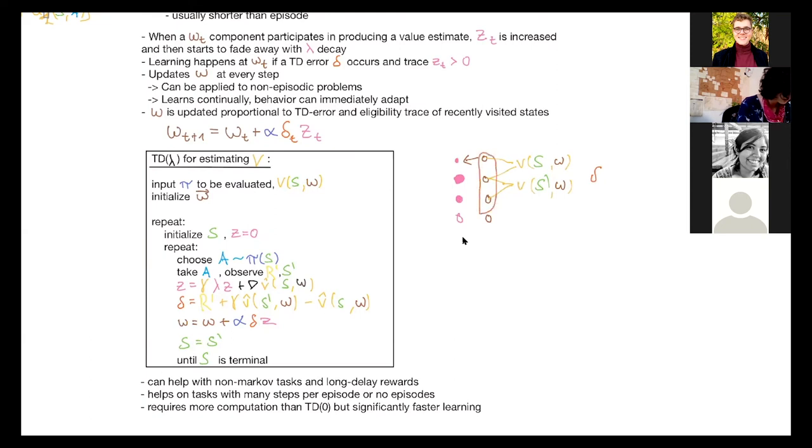so now we look at these eligibility traces and depending on how active they are, these weights will be updated. So since here there's no eligibility trace active, this weight won't be updated in this update using according to this TD error. These two will be updated a lot because their eligibility trace is pretty active. This one will be a little bit because this state participated a bit back in the past. So it kind of remembers what happened in the past few steps. And it doesn't just store the past feature vectors for all the past states, but it remembers it in a sense of these decaying eligibility traces. Does that make sense? Thanks, that was very helpful.